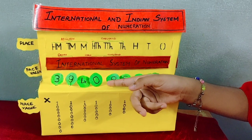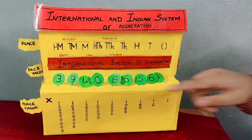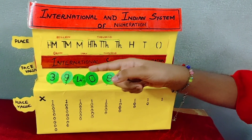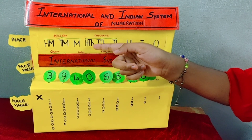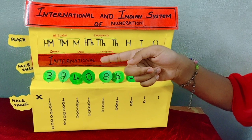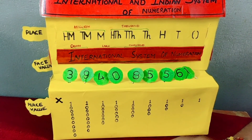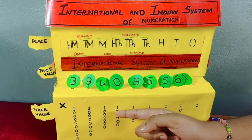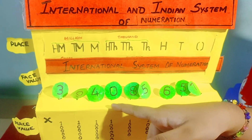Now let's see place, face value, and place value of 0. Look at the face — the face is 0, so the face value is 0. Look at the place — the place is 100,000. The place value is 0 multiplied by 100,000, which equals 0. Place value of 0 is always 0.